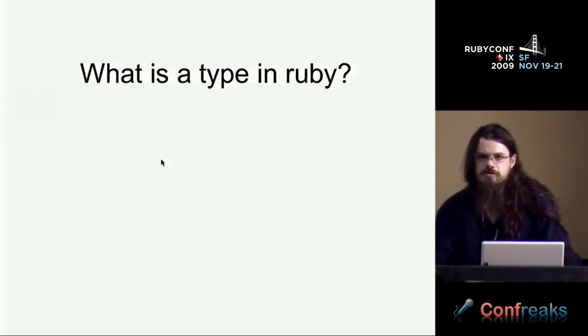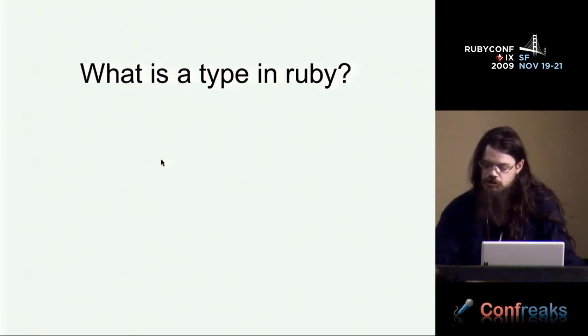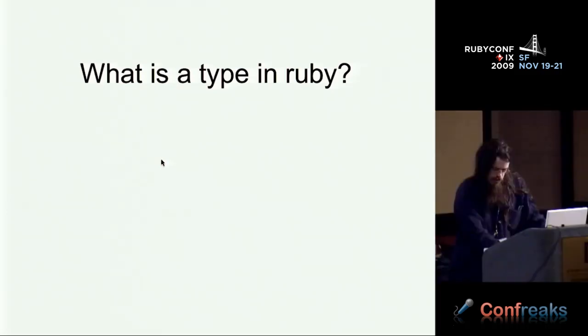So now I've been using this word type, which is kind of a controversial religious word in Ruby. It's been the cause of flame wars in the past. But I should spend a few moments to give a definition of what is a type in Ruby. I think I can come up with a definition that's both one that we can all agree on and one that's useful for writing compilers.